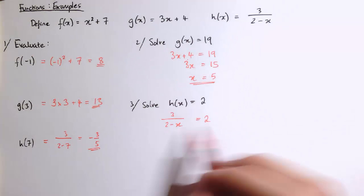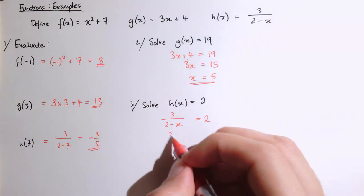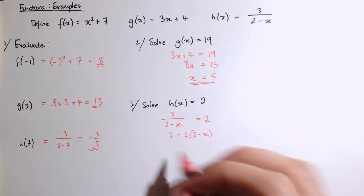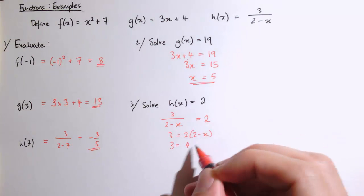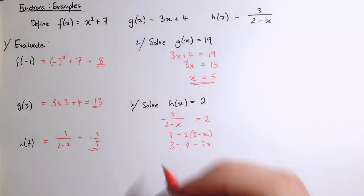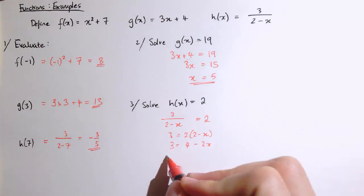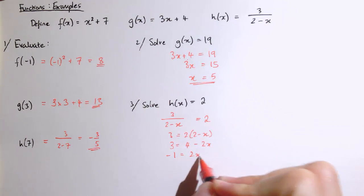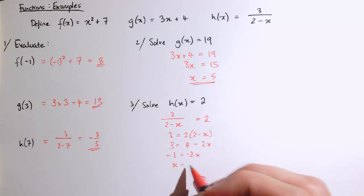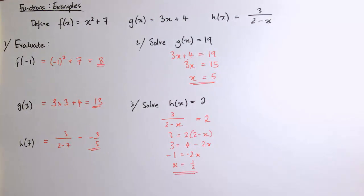To solve this one, we can multiply both sides by 2 minus x. So we get 3 equals 2 times 2 minus x. Multiplying out the brackets, we get this. And then subtracting 4 from each side gives minus 1 equals minus 2x. And finally, x equals 1 half.